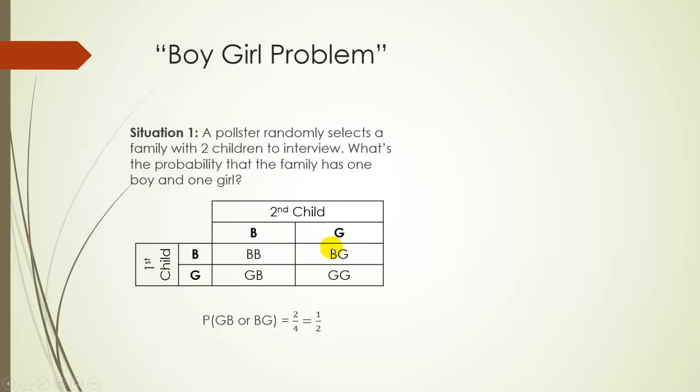Two of them have one boy and one girl, BG and GB. So there's a two out of four or one half chance of getting one boy and one girl.